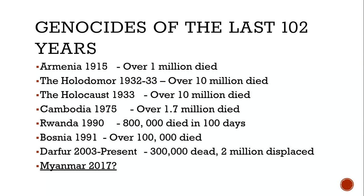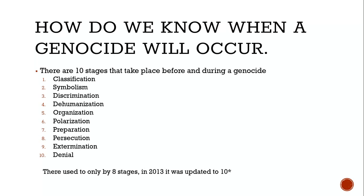These are approximations because when genocides occur, they try not to give exact details about how many people they are killing. Yet we see that they haven't been stopped. So how do we know when a genocide will occur? There are 10 stages that we're going to look at that take place before and during a genocide.